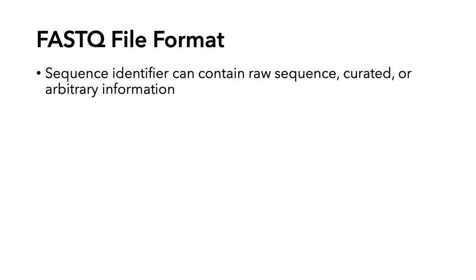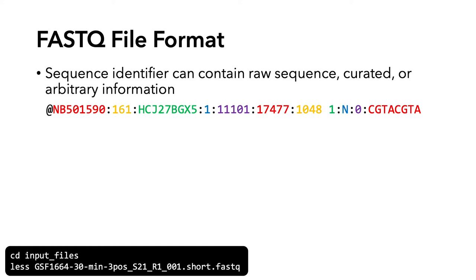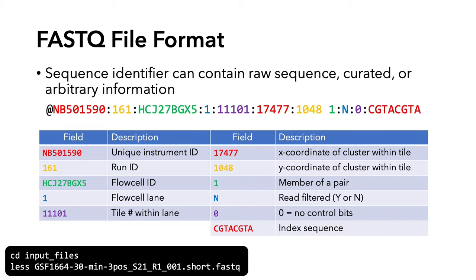Let's take a look at the sequence identifier. The sequence identifier can contain raw sequences, curated, or arbitrary information. I've broken the sequence identifier into individual components and color-coded them. You can use this table, which describes each field of the sequence identifier, as a reference. One of the fields you'll look at the most is probably the index sequence. All of the popular QC programs and workflows will use information in the sequence identifier to pull information about the run.